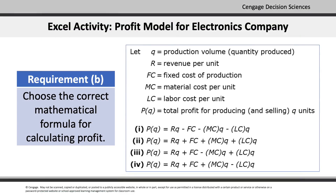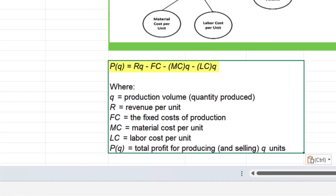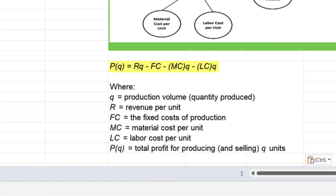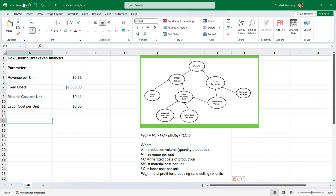Requirement B asks us to determine the correct mathematical formula for profit, which is based on the influence diagram. From the options presented, the correct formula is option 1. Total profit PQ is equal to the per unit revenue R, multiplied by the production volume Q, less fixed costs FC, less material cost per unit MC times the production quantity, less the per unit labor cost LC also multiplied by the production volume. There are also other acceptable ways to present the formula.